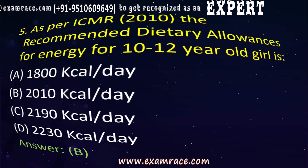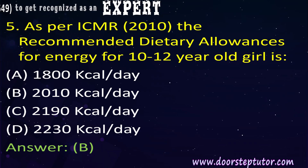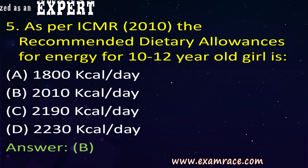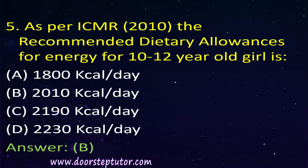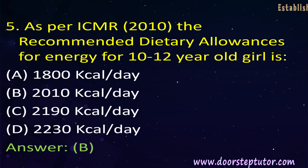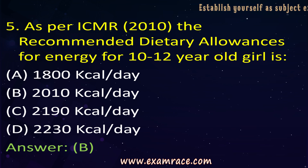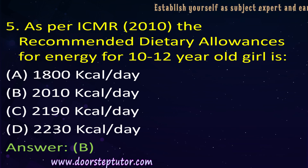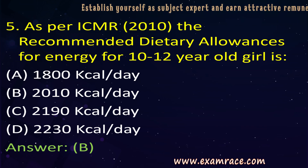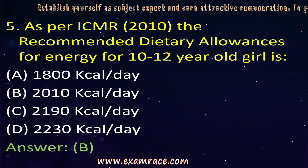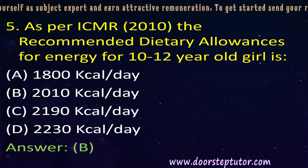The next question is: as per ICMR, the recommended dietary allowance for energy for 10 to 12 year old girls is 2,100 kilocalories per day. RDA, or Recommended Dietary Allowances, is defined as the average daily intake of nutrients required to meet the needs of a healthy individual and to lead a healthy life. A good knowledge of RDA is very important for answering this question.